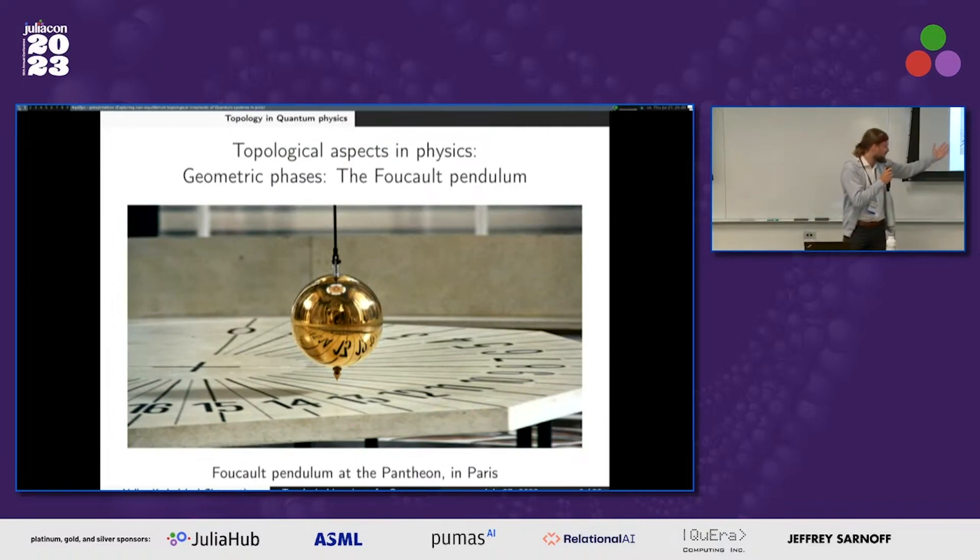Very simply, if you just consider the pendulum of Foucault, if the Earth was flat and not rotating, there would not be a phase. But if you rotate the Earth and you have a curved manifold, then there will be a little phase of two millimeters each oscillation. You can understand this in terms of differential geometry and topology.